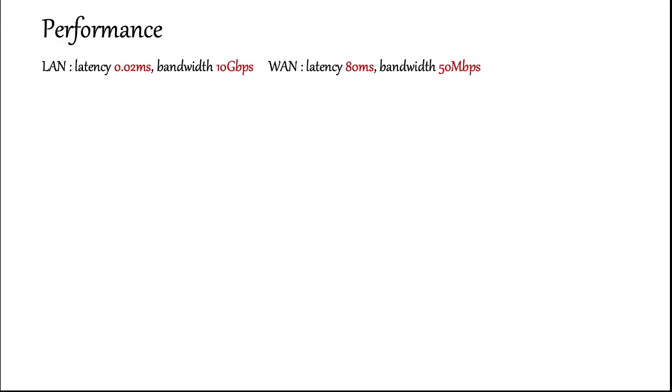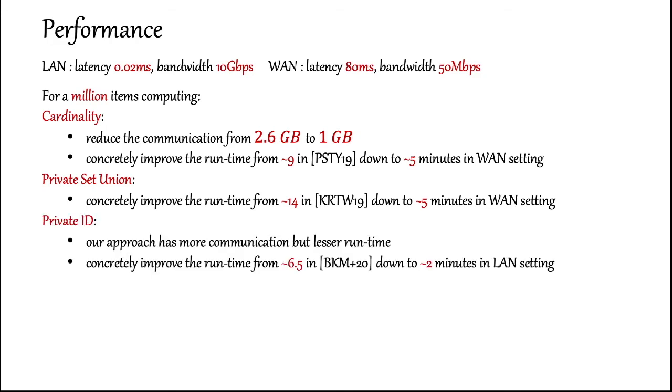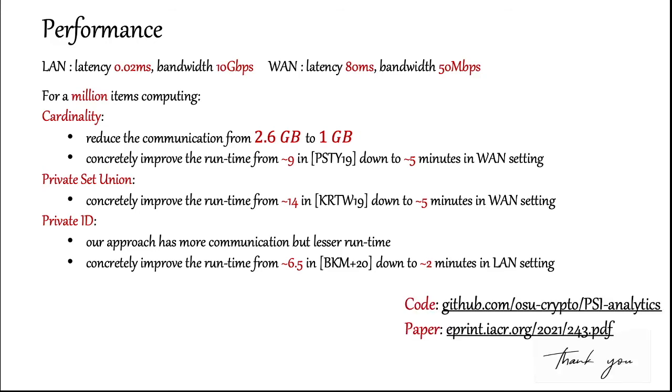Finally, I'd like to comment about our performance. We implemented all of our protocols and here are some takeaways. For a million items, to compute the cardinality, we reduce the communication and this gives us an improved runtime from 9 minutes down to 5 minutes in the WAN setting. For computing the union, we improve the runtime from 14 minutes down to 5 minutes in the WAN setting. Our private ID approach has more communication than the previous public key based approach. But we achieve a runtime improvement from 6.5 minutes down to 2 minutes on faster networks. Finally, you can find our code and paper in these links. Thank you so much for listening.